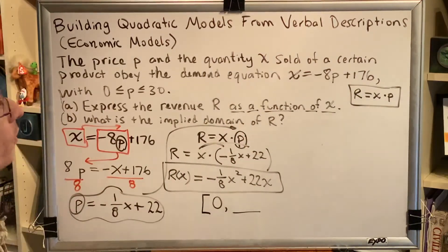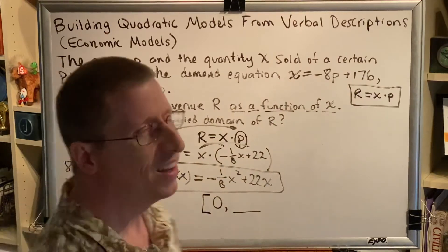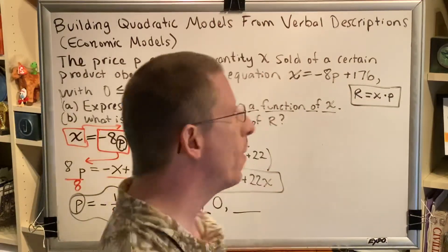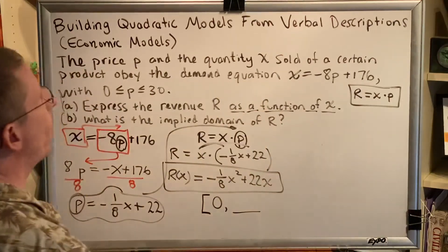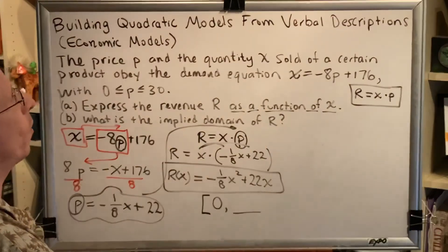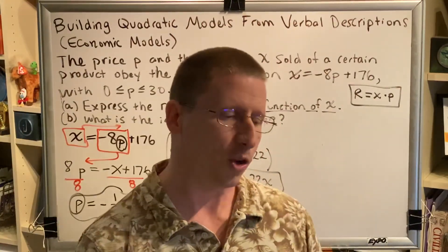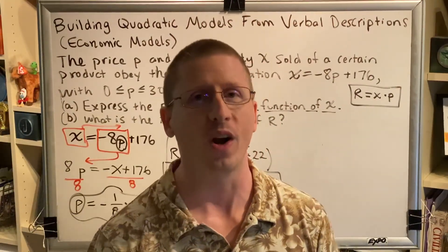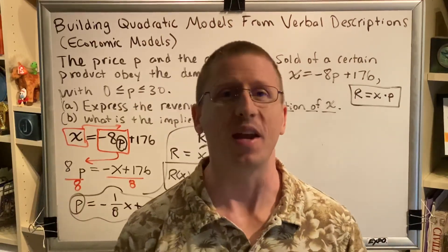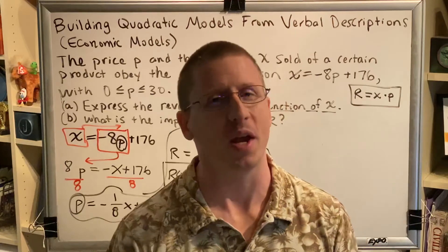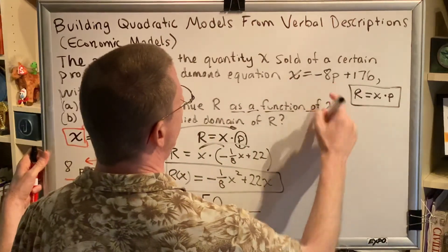Well, in this problem, the amount that we have is actually shown right here, 176. How do I know that that represents the number that I have? Well, this is a demand equation. And the demand equation tells you exactly how many will be sold based on the price. If you want to guarantee that all of the items that you have leave your store, what price should you charge for them? Zero. Free. Put a big sign on it that says free. And by the end of the day, they'll all be gone.